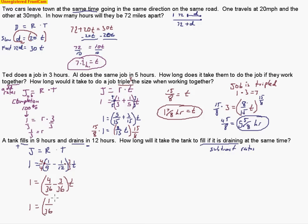They get one out of 36 parts done each hour. Multiplying by the reciprocal will give me how much time it takes them to do the job together, or against each other. Multiplying by the reciprocal cancels out that coefficient of t. So t ends up equaling 36. So it's going to take 36 hours for that tank to fill if it's draining at the same time.